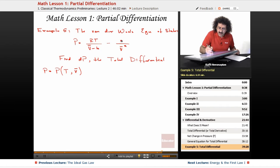So in this case, R is a constant, B is a constant, so T and V are the only two variables. So P is a function of the two variables, T and V.